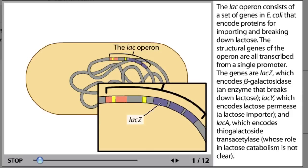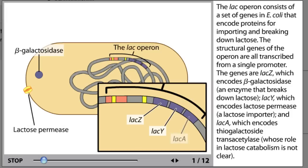The genes are lacZ, which encodes beta-galactosidase, an enzyme that breaks down lactose; lacY, which encodes lactose permease, a lactose importer; and lacA, which encodes thiogalactoside transacetylase, whose role in lactose catabolism is not clear.